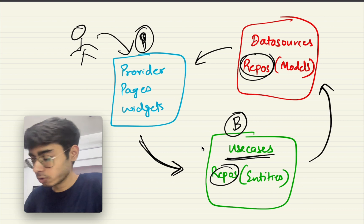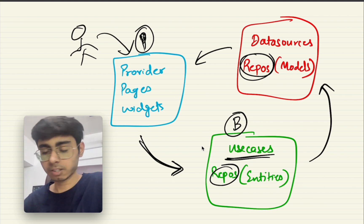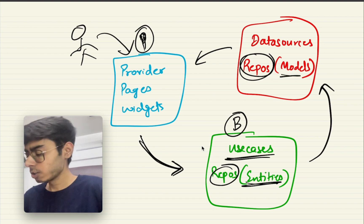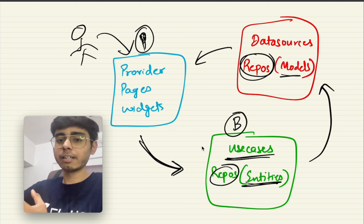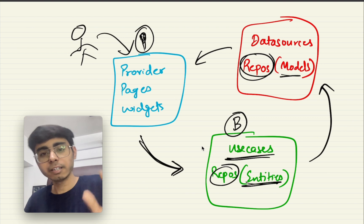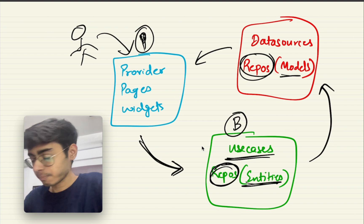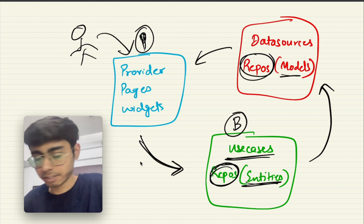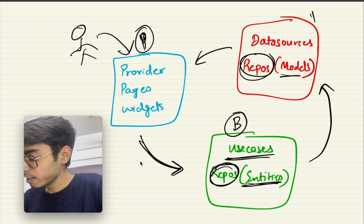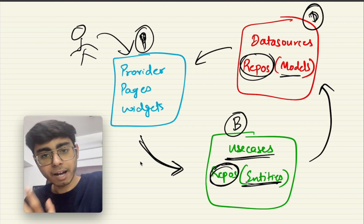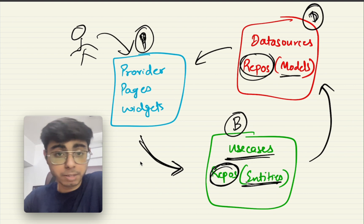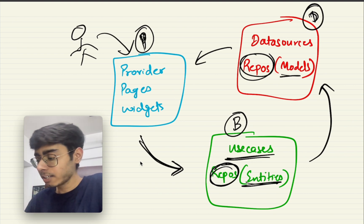Business layer repositories take data in the form of entities, and data layer repositories take data in the form of models. Entities and models are essentially the same thing — models work mainly with the network and data part, while entities work mainly with the business part, but both are data structures at the end. The data layer takes data in the form of models, calls repository functions — these are the network calls and API services calling your APIs, doing POST, GET, or any operation — and gets the data back in the form of responses.